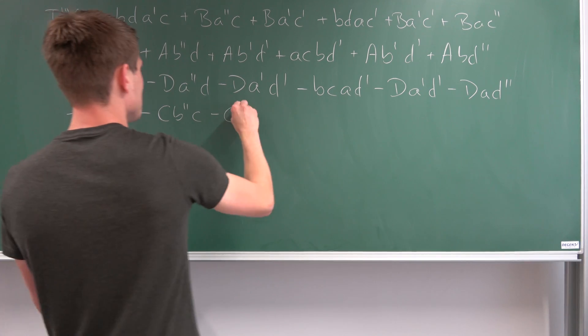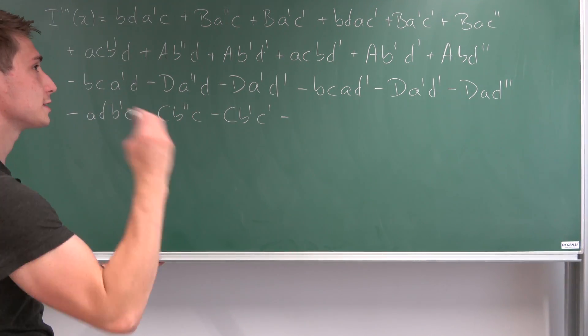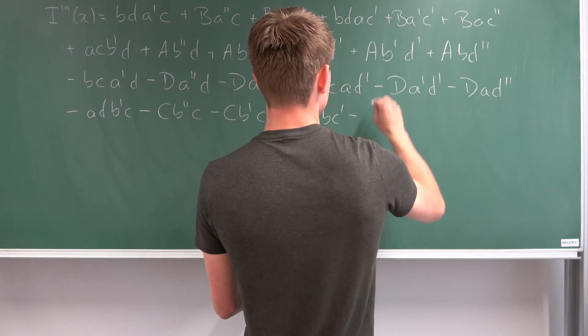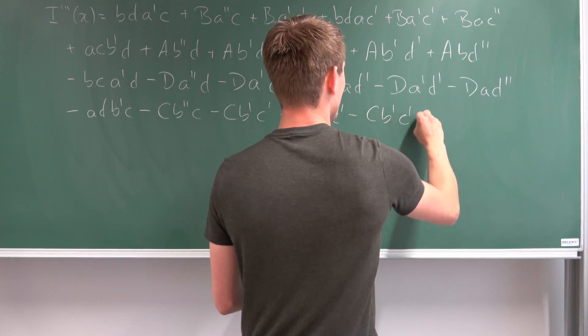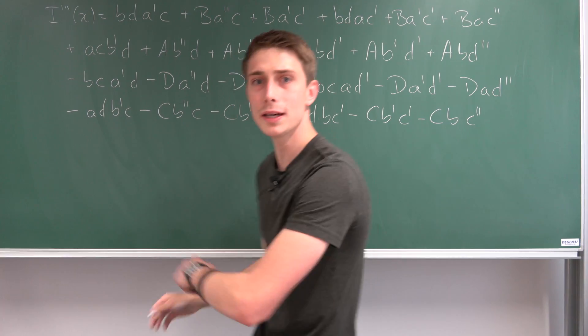Negative, the very last one, A times D B C prime minus C B prime C prime minus C B C double prime. And now we are done, my boys.